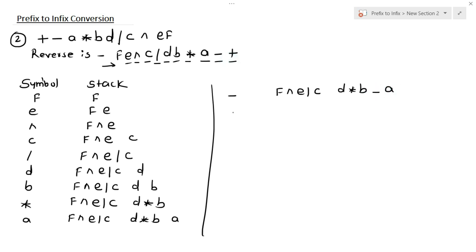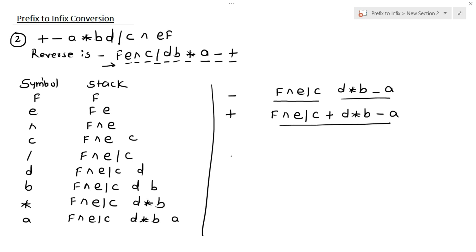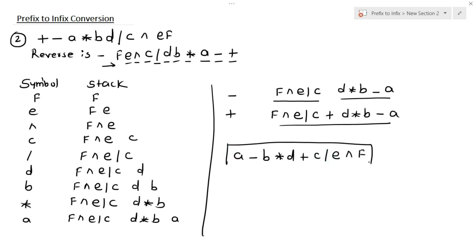The last symbol is plus. Now we have only two operands. So we get f exponential e division c plus d into b minus a. This is our infix expression, but this is not the final answer — we have to reverse the above expression. So we get: a minus b into d plus c divided by e exponential f. This is our final answer, the final infix expression for the above prefix expression. I hope you understand. If you have any doubt or query regarding this topic, then let me know in the comment section. Thank you.